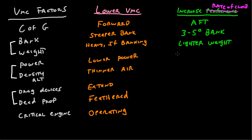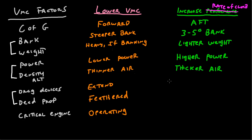Same thing with power — more power equals a better rate of climb. Same thing with density altitude. If the air is thicker, more dense, then the wings are going to work better, the engine is going to work better, the propeller is going to work better. Essentially, they all have more air for the aerodynamic surfaces to act on, which means you're going to get more thrust, more lift, and your rate of climb is going to be better. So, thicker, more dense air is better for rate of climb.